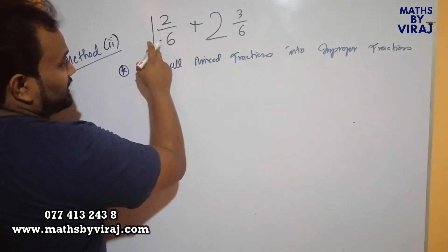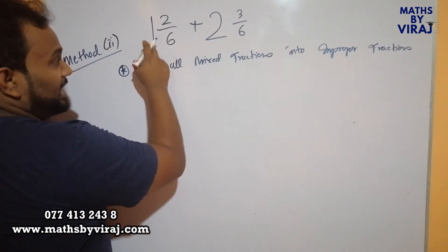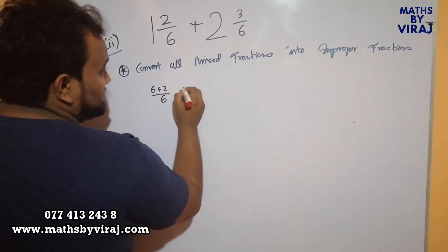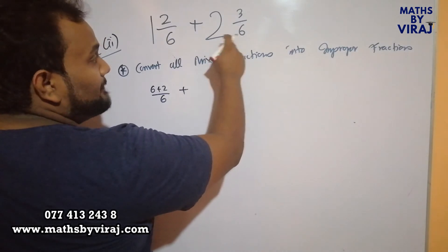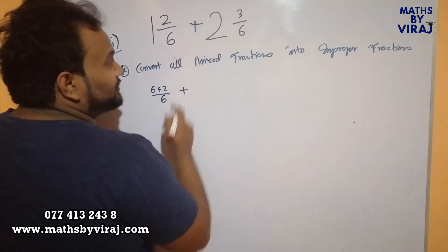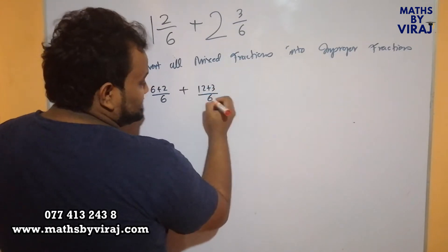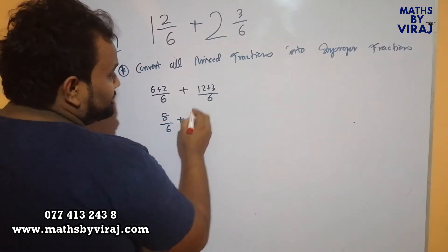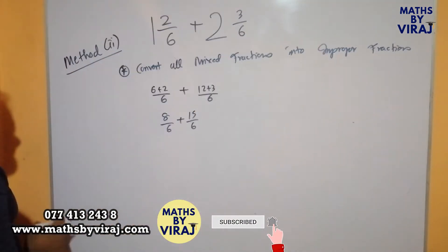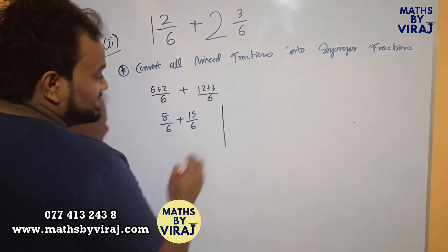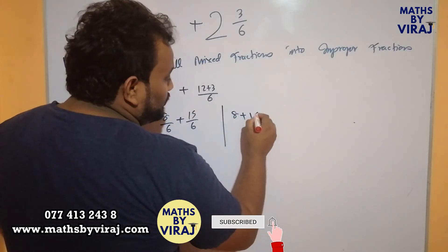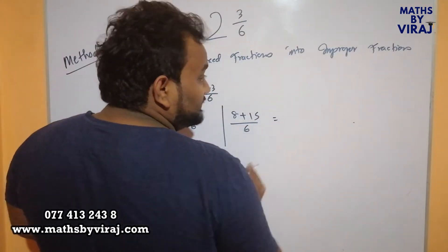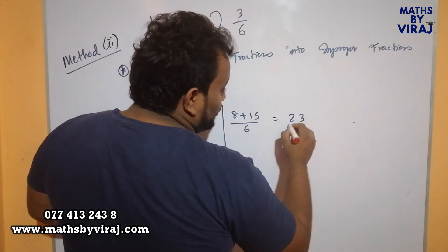Now 6 and 1 are multiplied, and to that you add 2, giving 6 plus 2 over 6. Plus: again 6 and 2 are multiplied, and to that you add 3, which is 12 plus 3 over 6. This gives 8 over 6 plus 15 over 6. Now as you can see, the denominators are the same, so what I have to do is simply add the numerators. 8 plus 15 is 23 over 6.